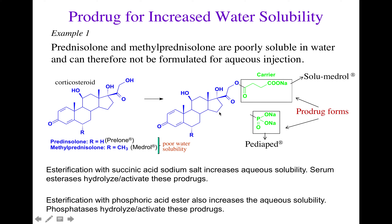What some drug design companies have done is develop Solu-Medrol and Pediapred. On the active corticosteroid there is an alcohol, and they used a carrier that contained a carboxylic acid. They conjugated this carboxylic acid carrier with the alcohol of the corticosteroid to form an ester prodrug known as Solu-Medrol, which contains a carboxylic acid. That carboxylic acid will be ionized at physiological pH, making it more water soluble. You can also use phosphates to increase water solubility — they did the same thing with Pediapred, conjugating a phosphate to the alcohol of the corticosteroid.